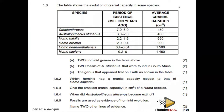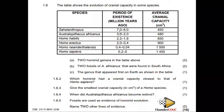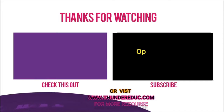The table shows the evolutionary trend of cranial capacity in some species: Sahelanthropus, Australopithecus, Homo habilis, Homo erectus, Neanderthals, and Homo sapiens. The period of existence is given, and the brain capacity is increasing. Remember what an increase in brain capacity means — give two Homo genera.